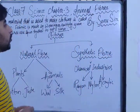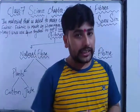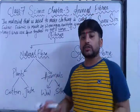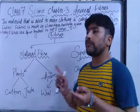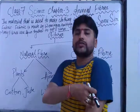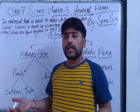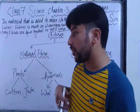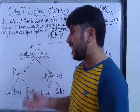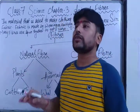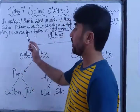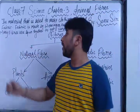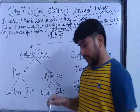The material that is used to make clothing is called fabric. Any cloth material is made up of fabric — either cotton, synthetic, nylon, or any other. Fabric is made up of weaving or knitting. Whenever any yarn is woven or knitted, that fabric is prepared.